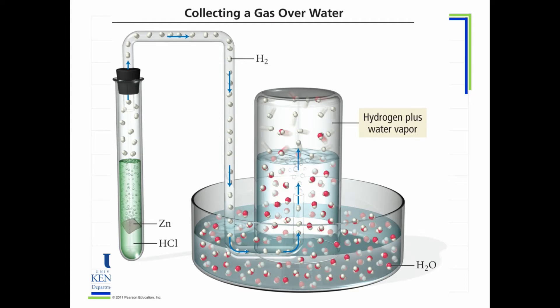This image represents a common way to collect gas. You take a glass container, fill it with water, put it upside down into a bigger container of water, and run a tube from where the gas is being generated into the collection vessel. The gas bubbles up, pushes the water out, and when the water is pushed out you know it's filled. The problem is it doesn't just collect the gas you're interested in - it also collects water vapor. To find the pressure of just the hydrogen gas, you'd have to subtract out the water vapor pressure.